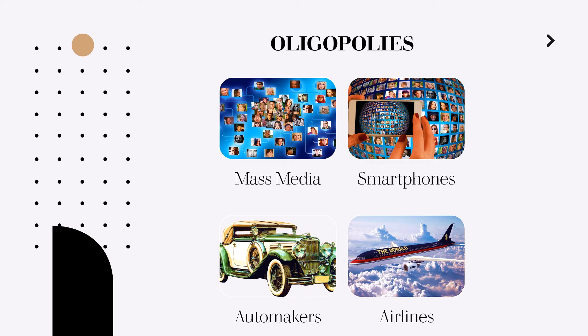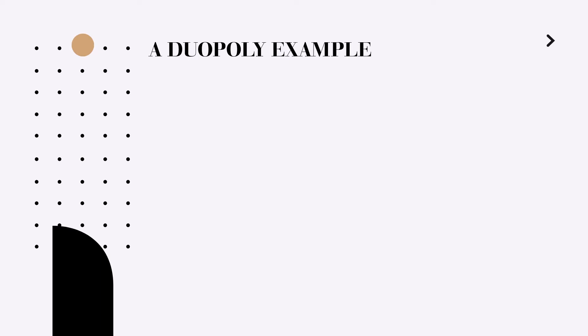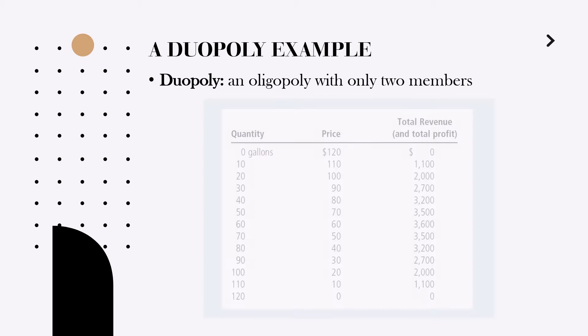As of 2021, there are four major domestic airlines: American Airlines, Delta Airlines, Southwest Airlines, and United Airlines Holdings, which fly around 65 percent of all domestic passengers in 2020. To understand oligopolies, let us start with an example of a duopoly. A duopoly is an oligopoly with only two members.